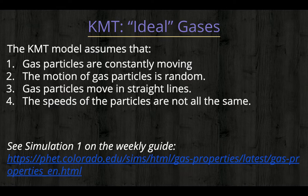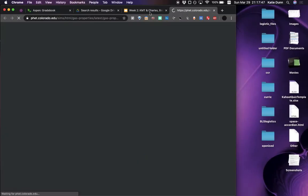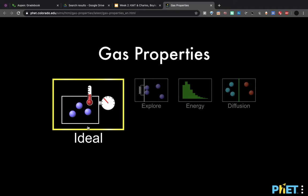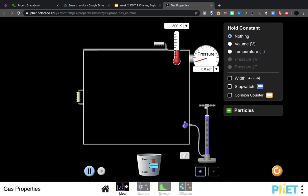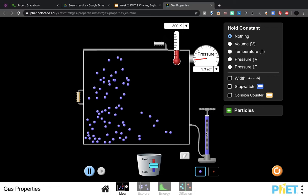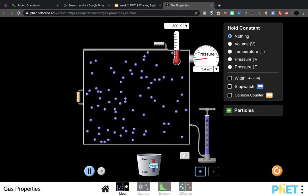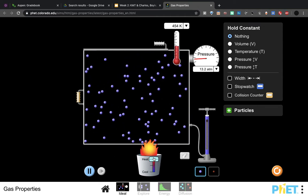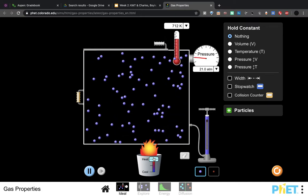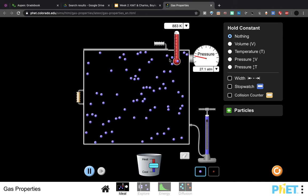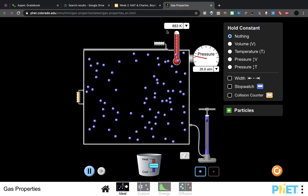To figure out what this actually means, you can see simulation 1 on the weekly guide. In the simulation, you can click ideal, as in ideal gas, and you pull this pump here, and gas molecules come in. Each individual one is in a straight line. They're bouncing off. It doesn't look like they're evenly distributed yet, but over time they will be. I can heat it up and they'll start moving faster. They're kind of bouncing around. This is all linked in the weekly guide, and there are accompanying questions to figure out what you're supposed to be looking at.